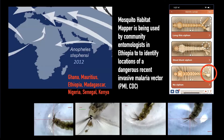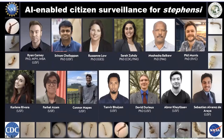The map is now being used by community entomologists in Ethiopia to identify locations of a dangerous recent invasive mosquito vector called Anopheles stephensi. She is a very dangerous mosquito because she also breeds in containers, which completely changes the landscape and demographic of where and when we're finding mosquitoes. We have a big team now looking at AI — they are using your photographs in order to identify this dangerous species in Africa.